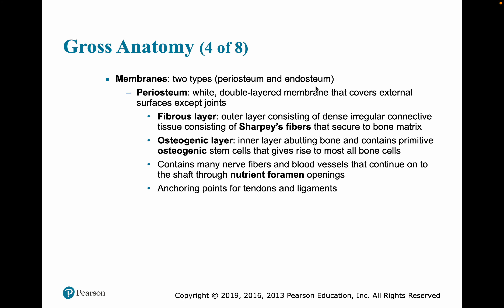There are two types of membranes associated with long bones: the periosteum and the endosteum. The periosteum is a white double-layered membrane covering the external surface, except where there are joints. Its outer fibrous layer has dense irregular connective tissue with Sharpey's fibers that secure it to the bone matrix. The inner osteogenic layer contains osteogenic stem cells, which give rise to most bone cells. This membrane also contains nerve fibers and blood vessels, and serves as an anchoring point for tendons and ligaments.